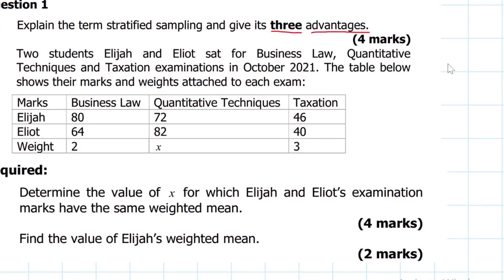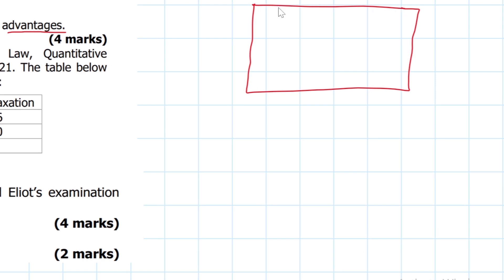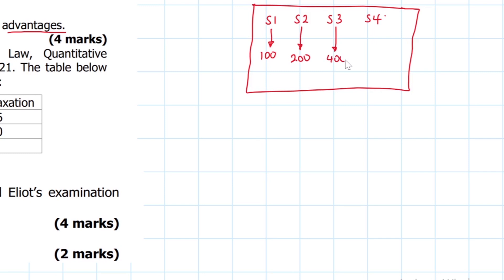Let me draw this box to illustrate. This is a school, and in this school we have classes: senior one, senior two, senior three, and senior four. The students in senior one are 100, senior two are 200, senior three are 400, and senior four are 600. I'm just coming up with arbitrary figures.